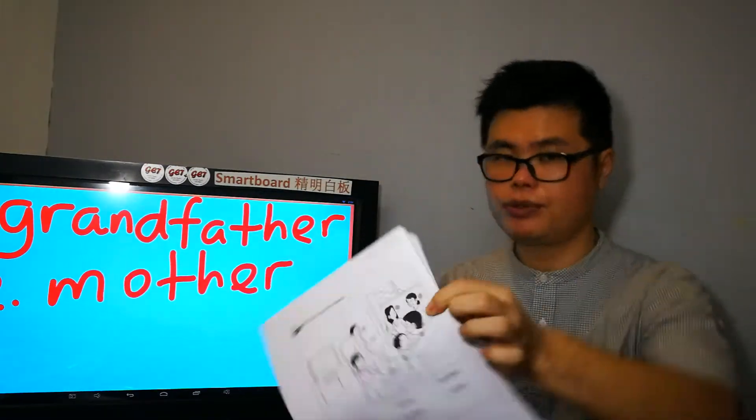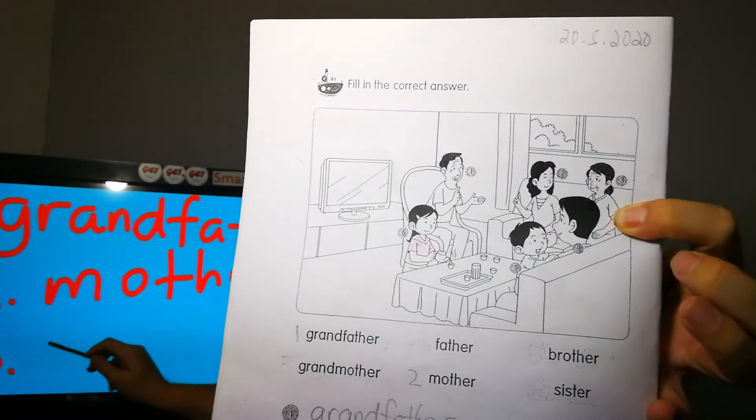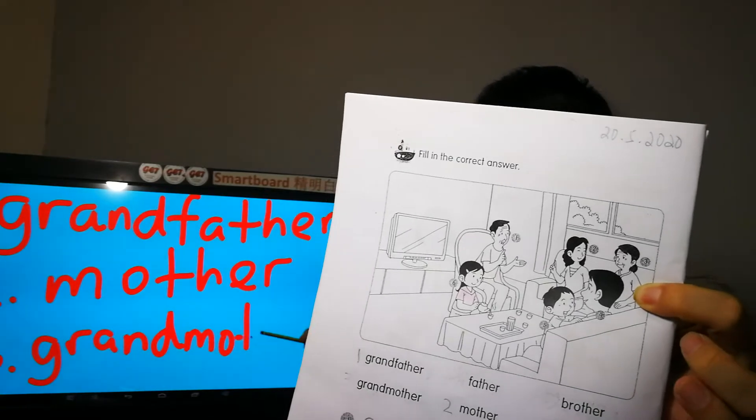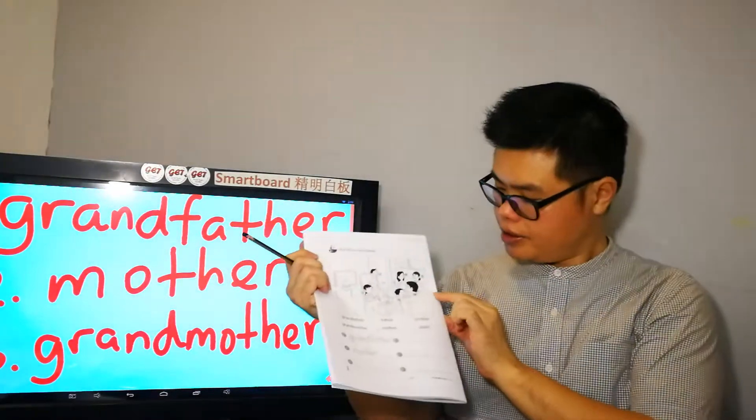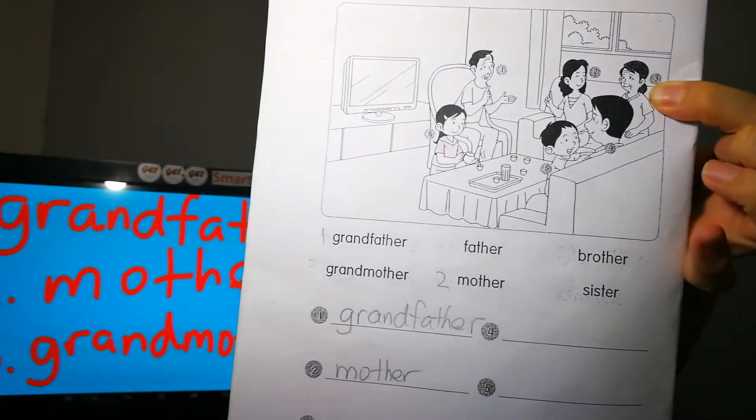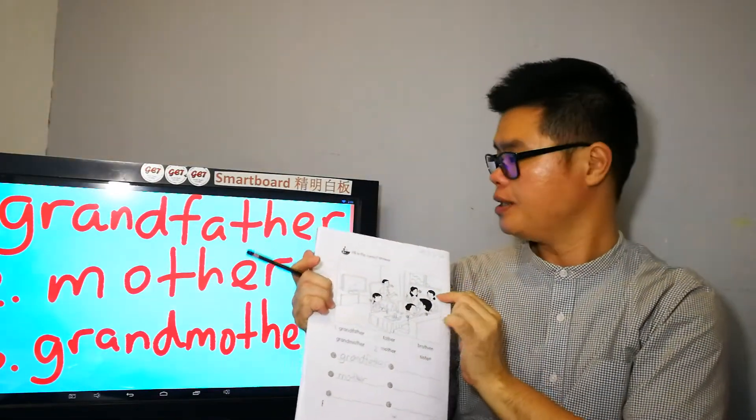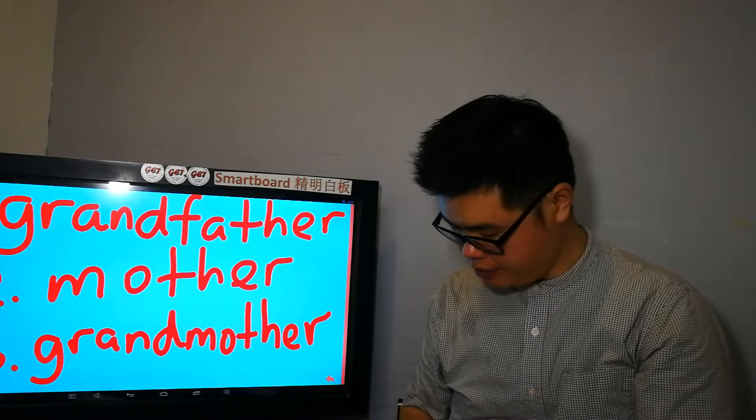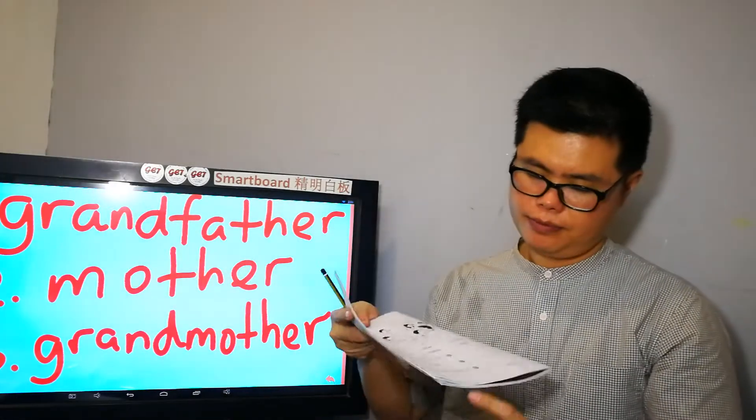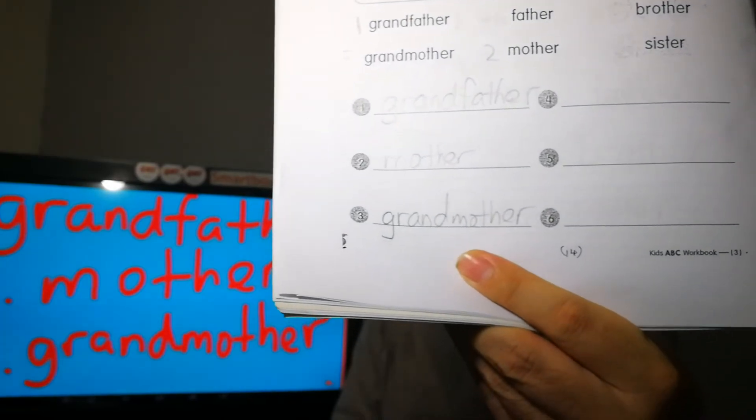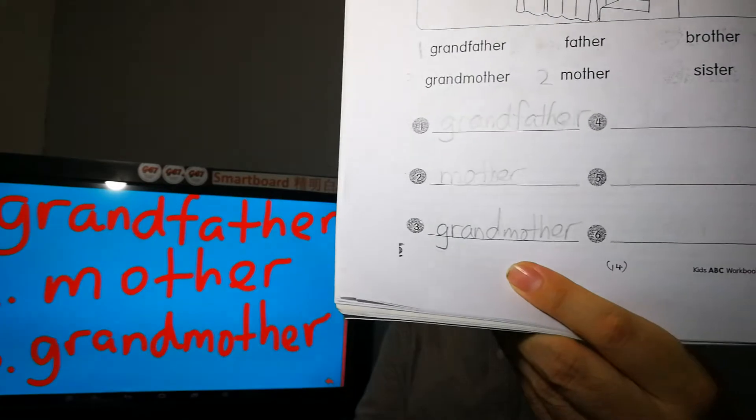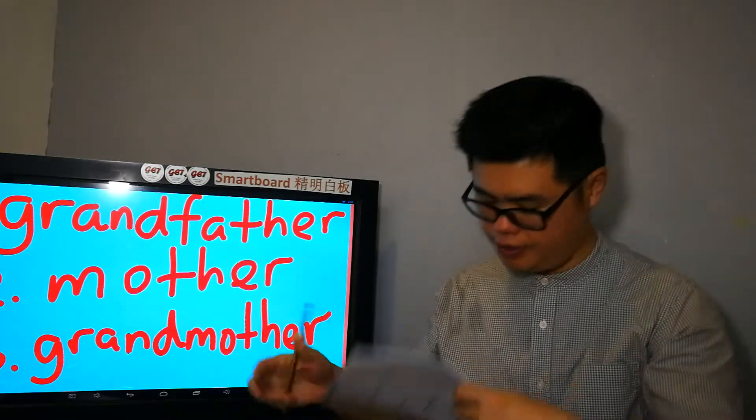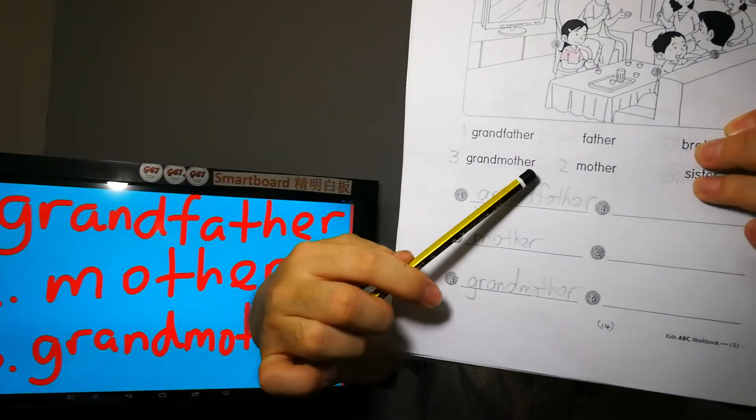And nombor tiga. Ni nombor tiga. Nenek eh. Nenek. Grandmother. Grandmother. 三號的是婆婆. 婆婆. 爸爸的媽媽 or 媽媽的媽媽. OK? Grandmother. Grandmother. Alright? Please write it down. Grandmother. Alright, Grandmother. Grandmother. Alright No.3 Grandmother Alright 1, 2, 3. Please write it down.